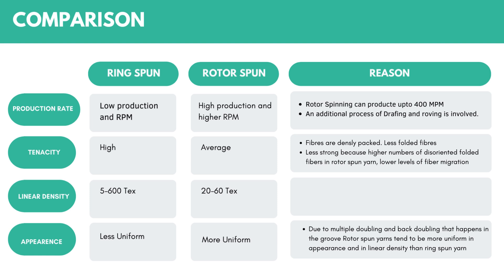The second property is tenacity. Ring spun yarns have higher tenacity compared to rotor spun yarns. In open end spinning, there is a higher average diameter — for the same yarn count, the average diameter of rotor spun yarn will be larger. This means the fibres are loosely packed, creating bulk, and due to this high bulk there are a high number of folded fibres. This makes rotor spun yarns less strong because more disoriented fibres are present. There is also lower fibre migration, less packing, and the presence of non-load-bearing wrapper fibres that keep the core intact but do not contribute to yarn strength. As a result, rotor spun yarns are generally more extensible than ring spun yarns.